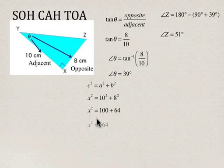When we simplify, x squared is equal to 164. Take the square root of both sides, and we get that side YZ, or the hypotenuse, is approximately equal to 12.8 centimeters.